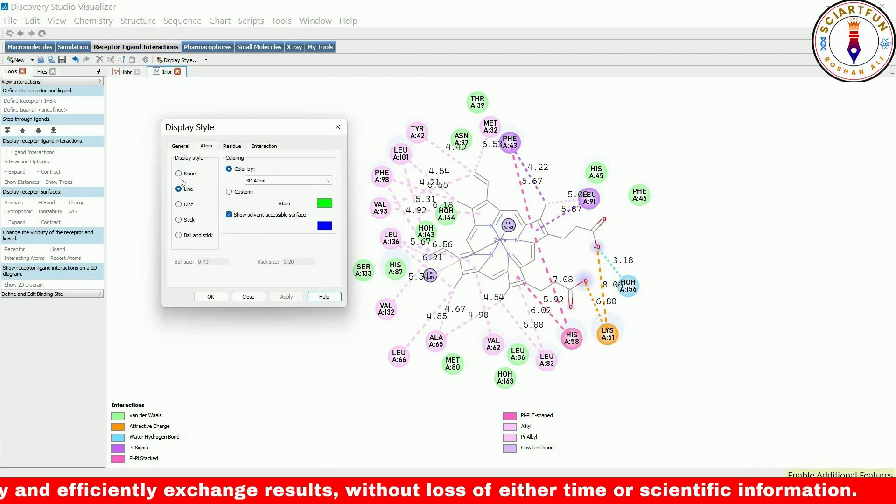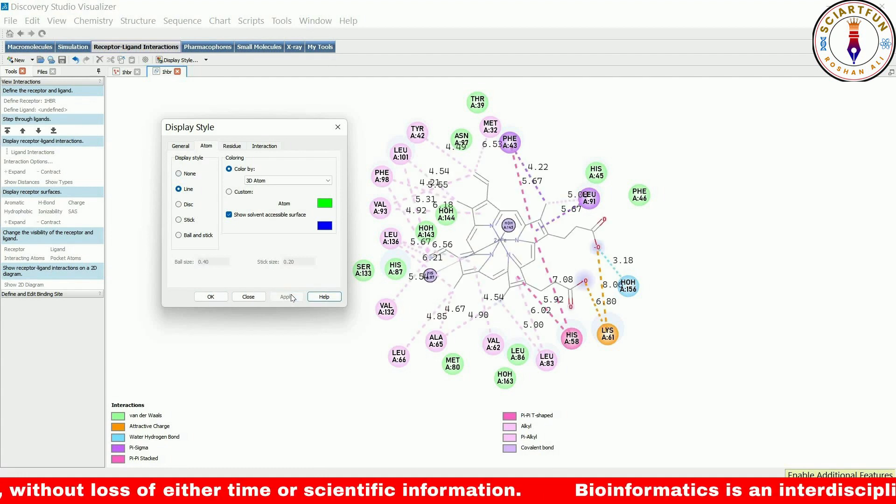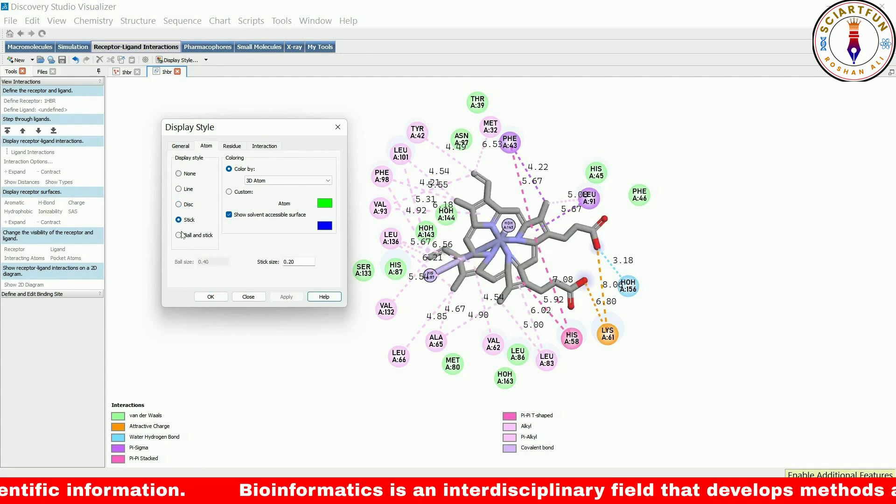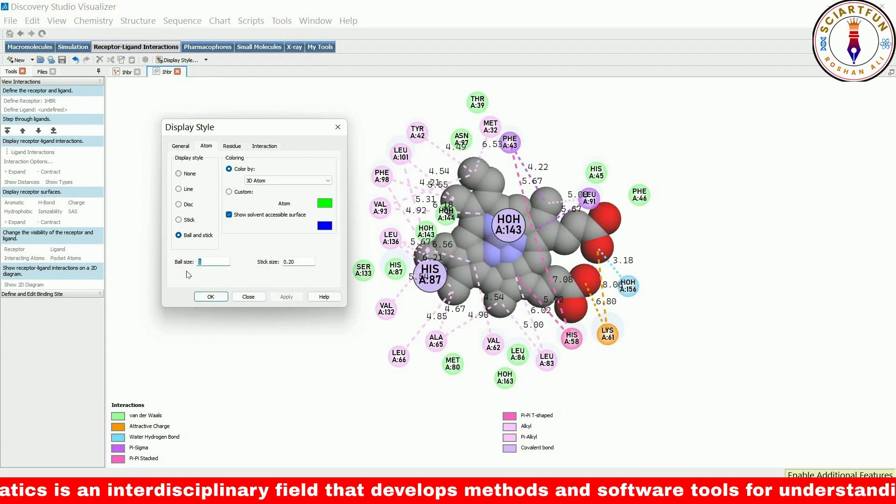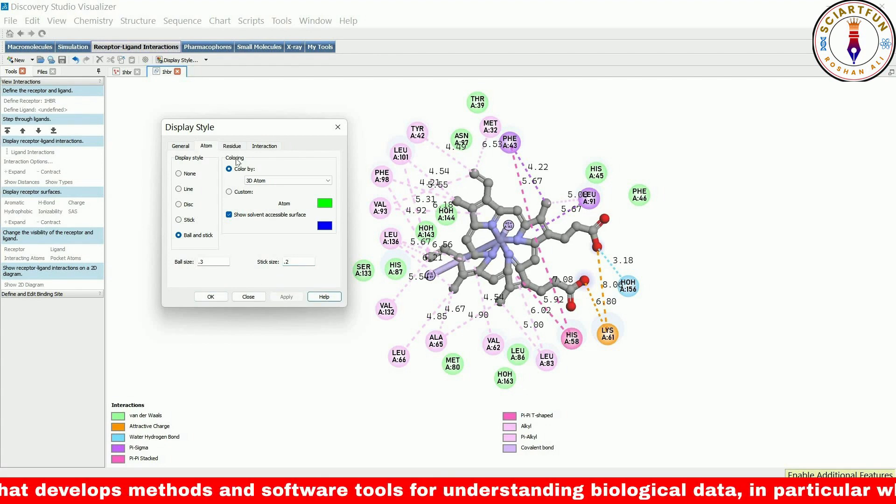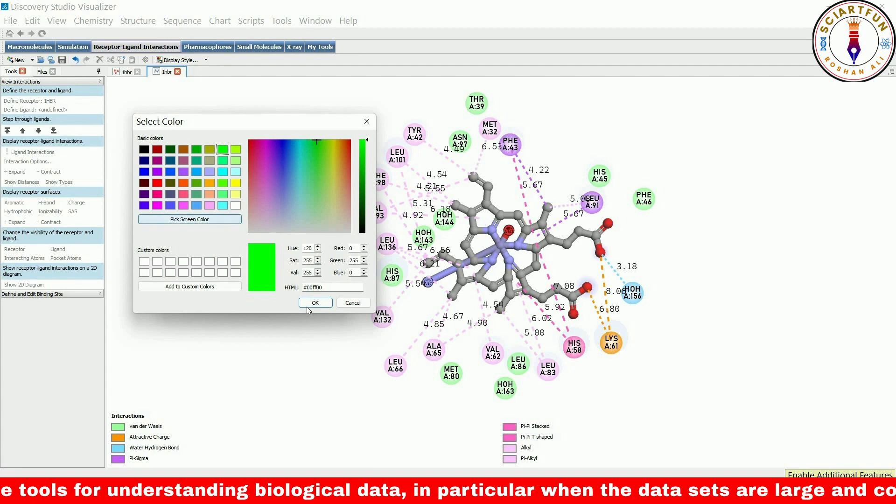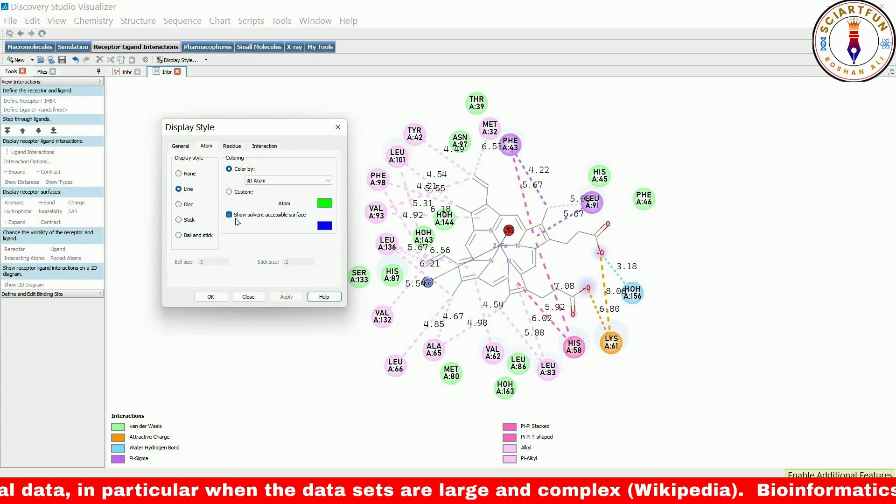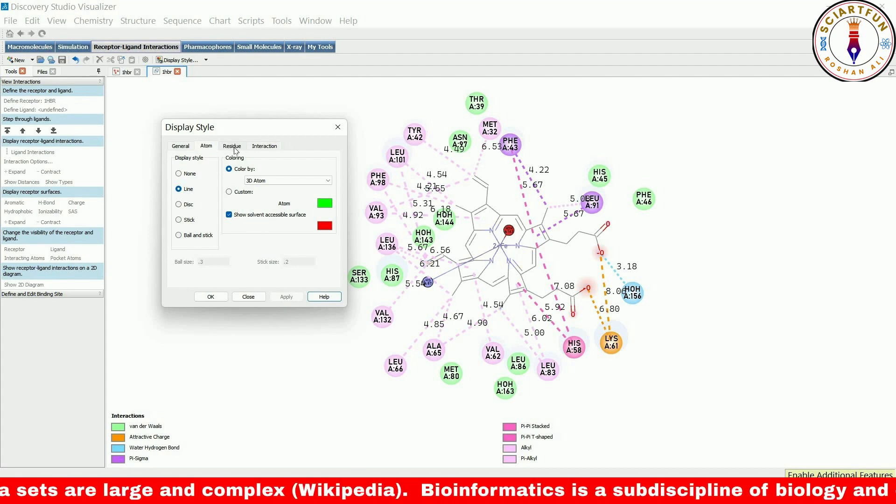In the atom tab, we can control the appearance of the ligand. We have the option to turn off the ligand display, display it as lines, as disks, as sticks, or bonds with sticks and atoms as balls. We can also change the ball size, the thickness of the bonds, and the color of the atoms.